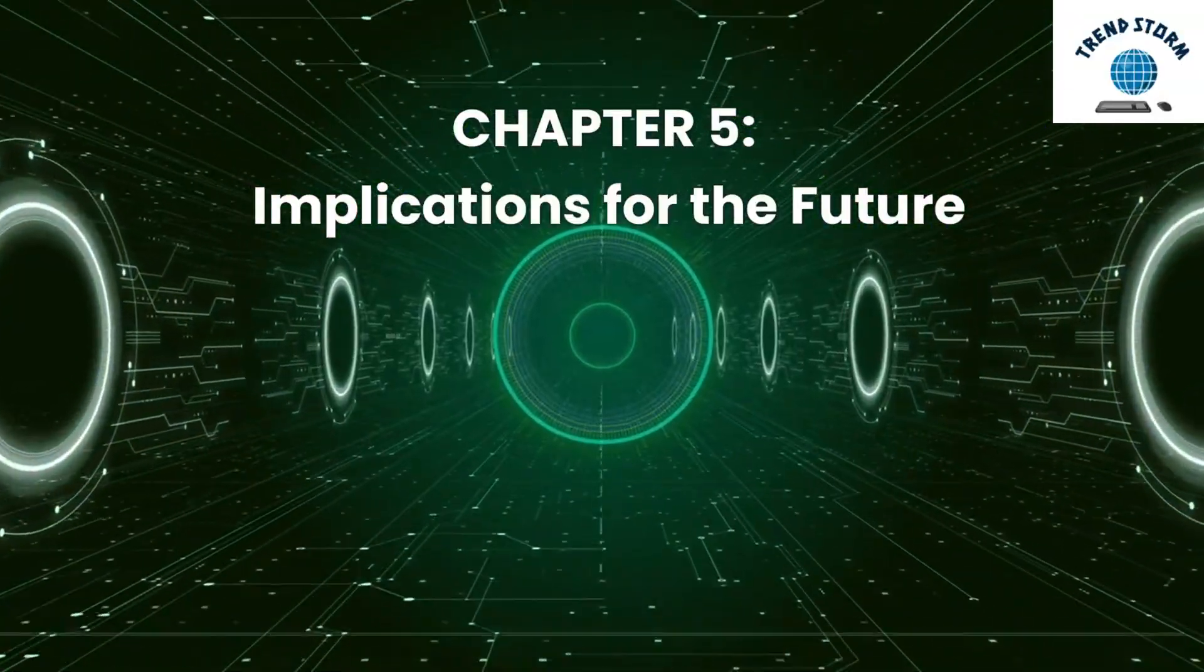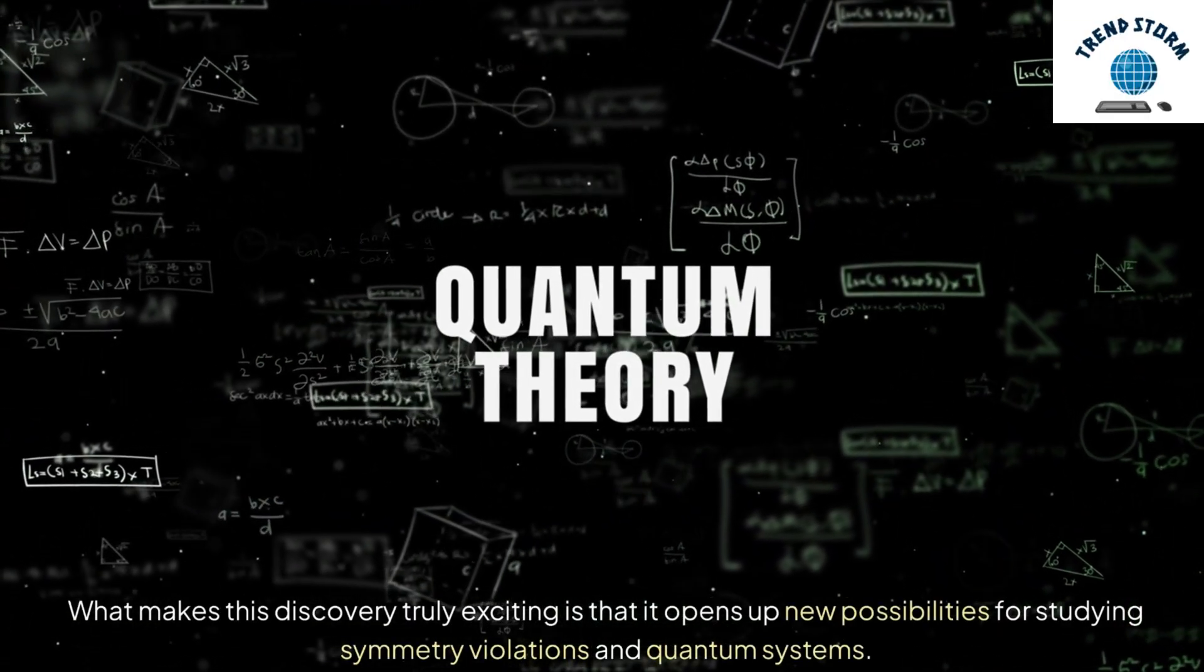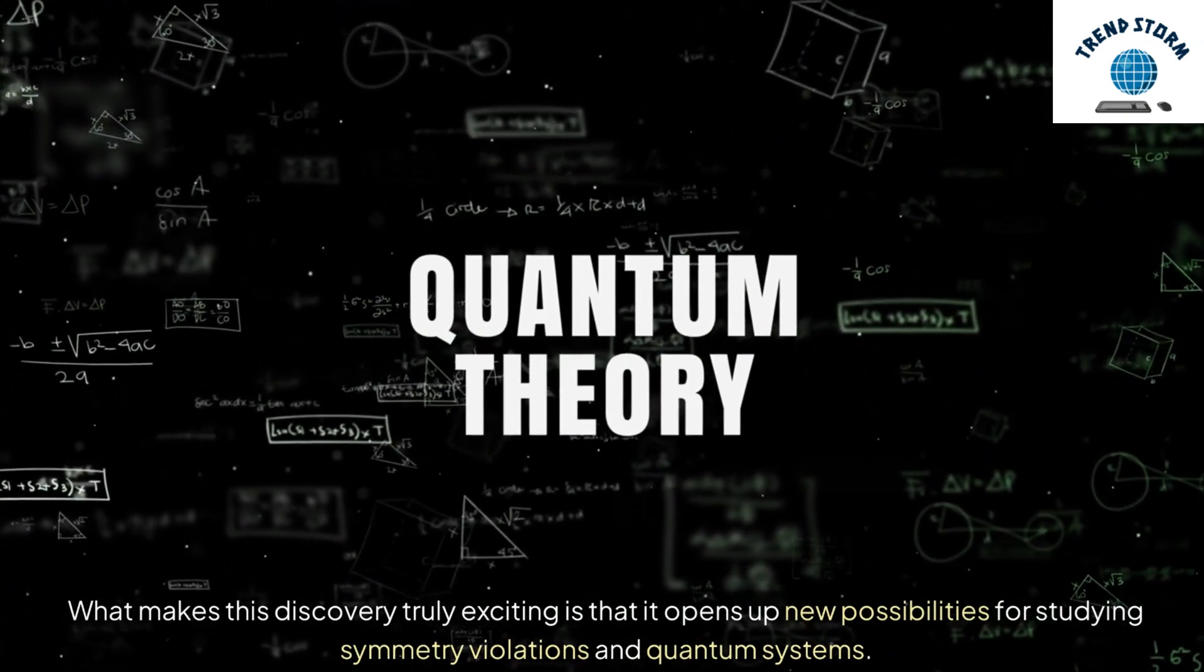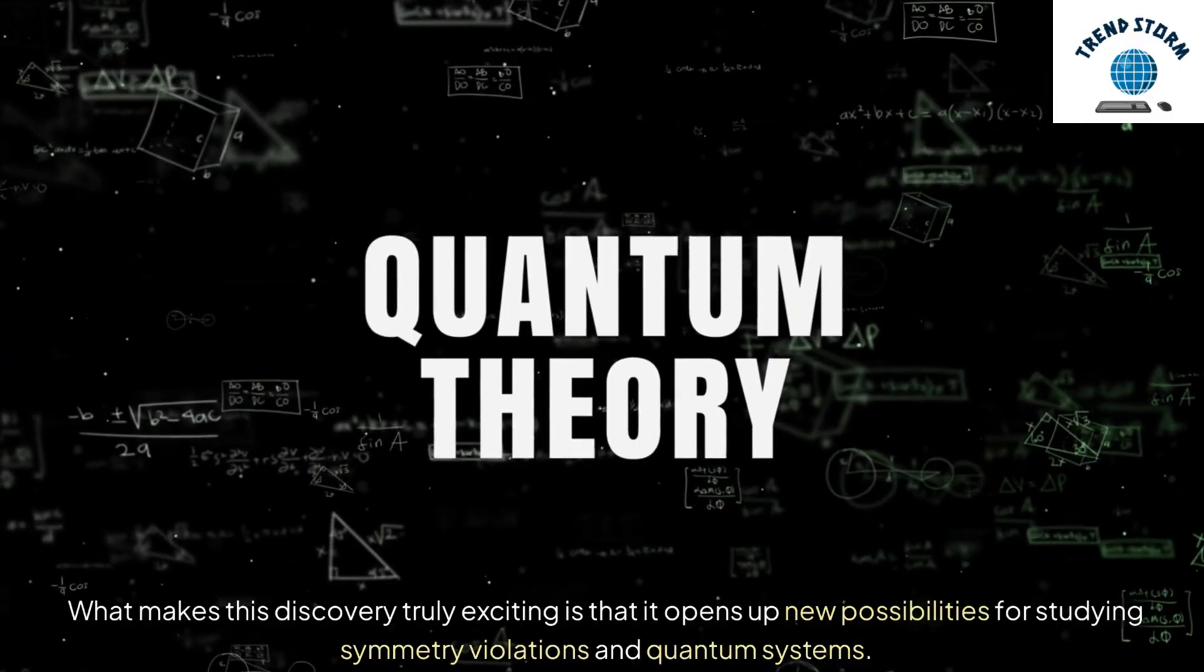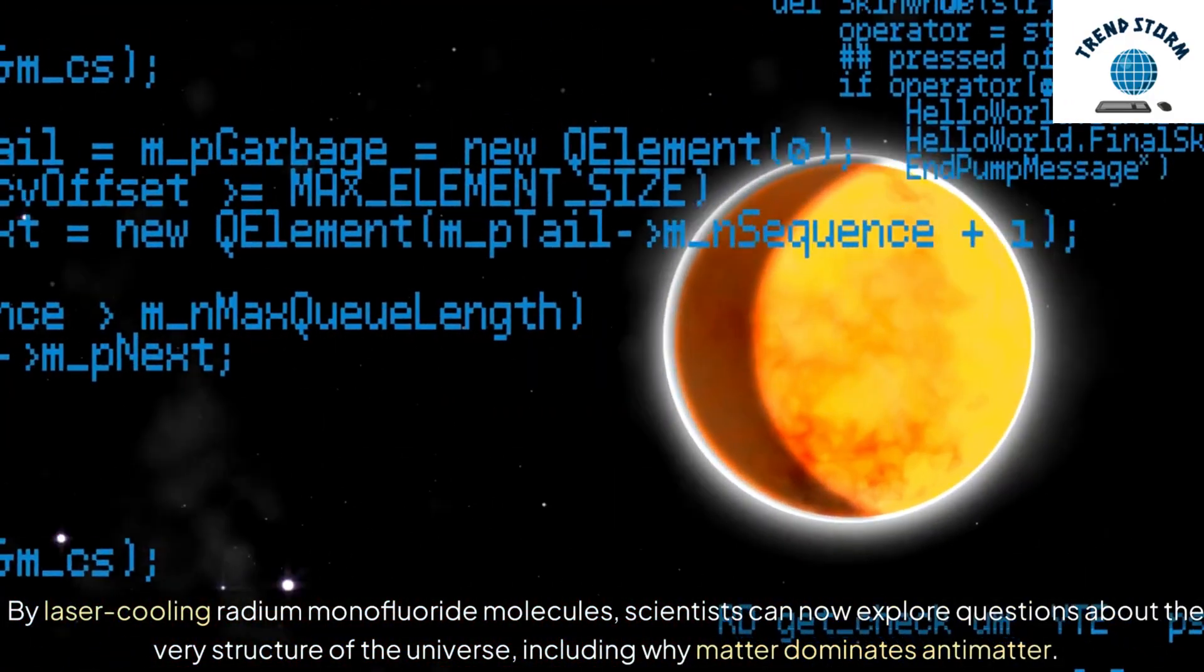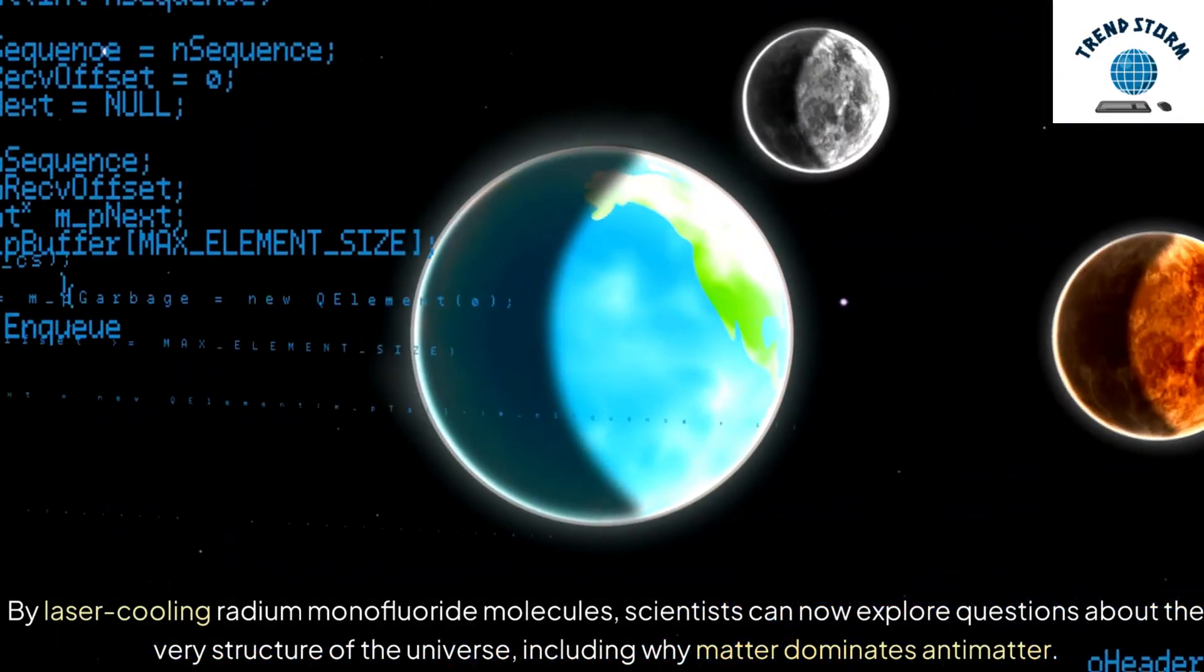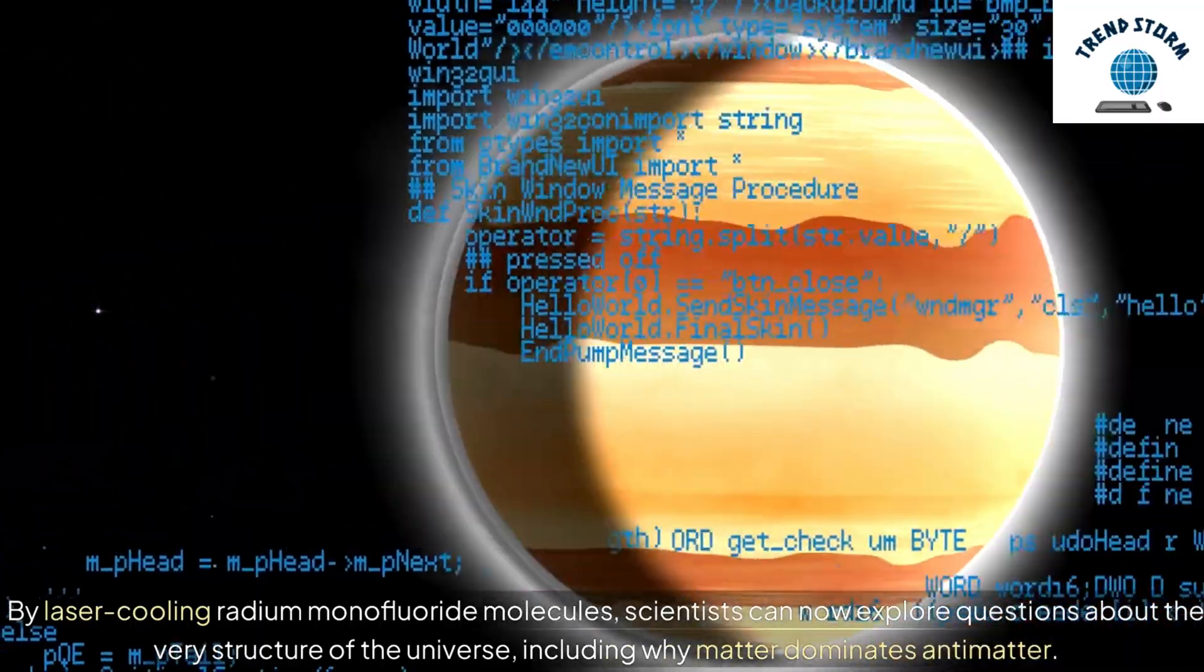Chapter 5: Implications for the Future. What makes this discovery truly exciting is that it opens up new possibilities for studying symmetry violations and quantum systems. By laser cooling radium monofluoride molecules, scientists can now explore questions about the very structure of the universe, including why matter dominates antimatter.